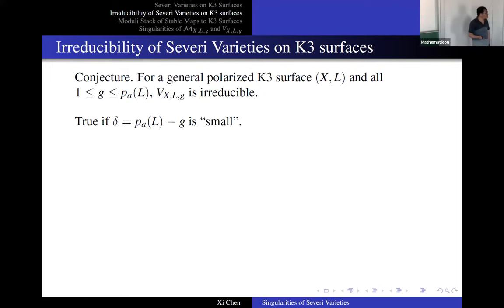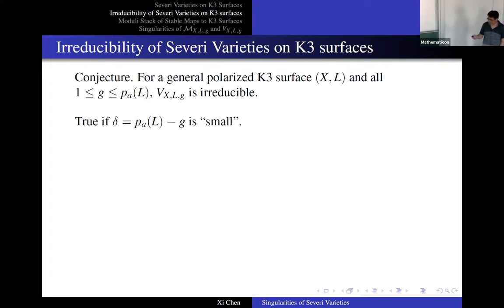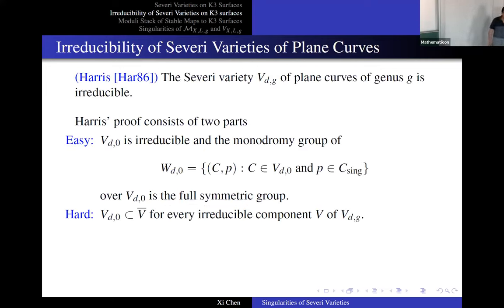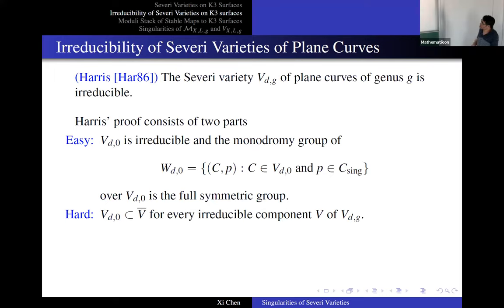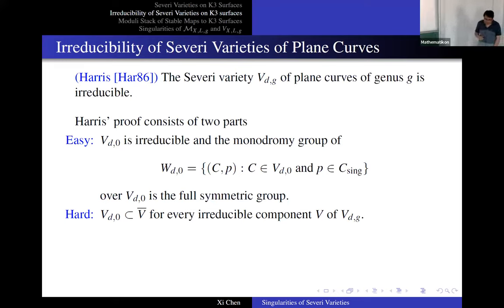We're trying to prove the Severi variety is irreducible. The proof of these kinds of things — like Severi variety or moduli space — usually starts with the Harris proof for plane curves. Joe Harris proved that if you take the Severi variety of plane curves of degree d and genus g, this variety is irreducible. That's a classical result, and we look at whether we can carry his proof to the K3 surface.